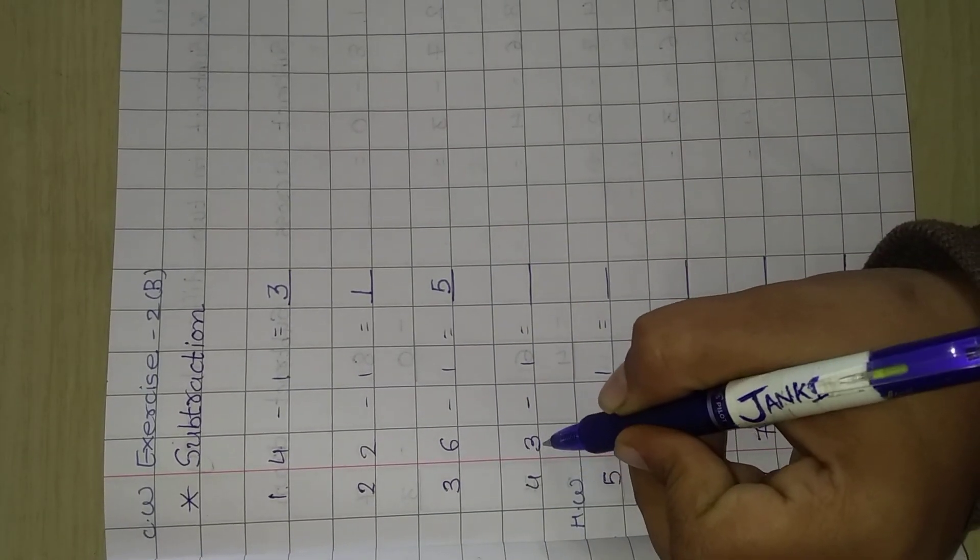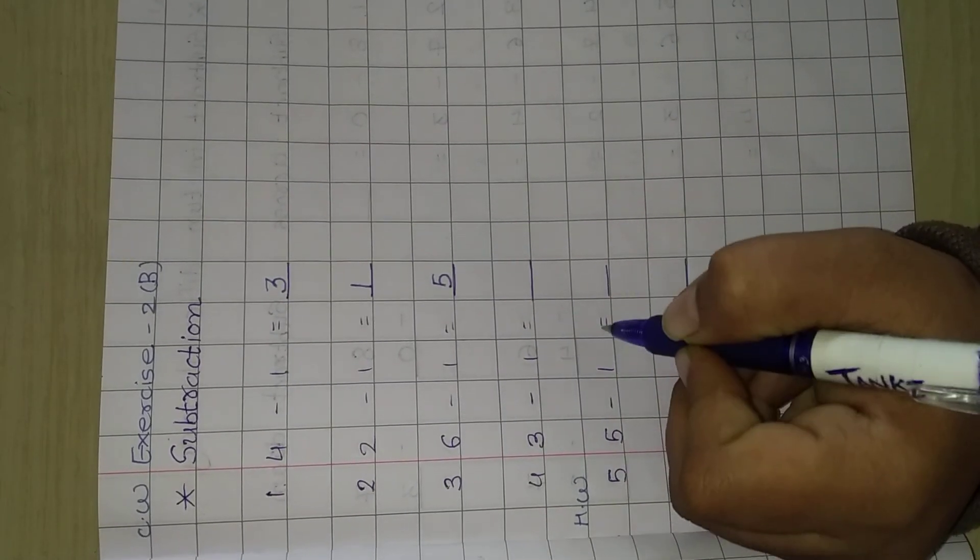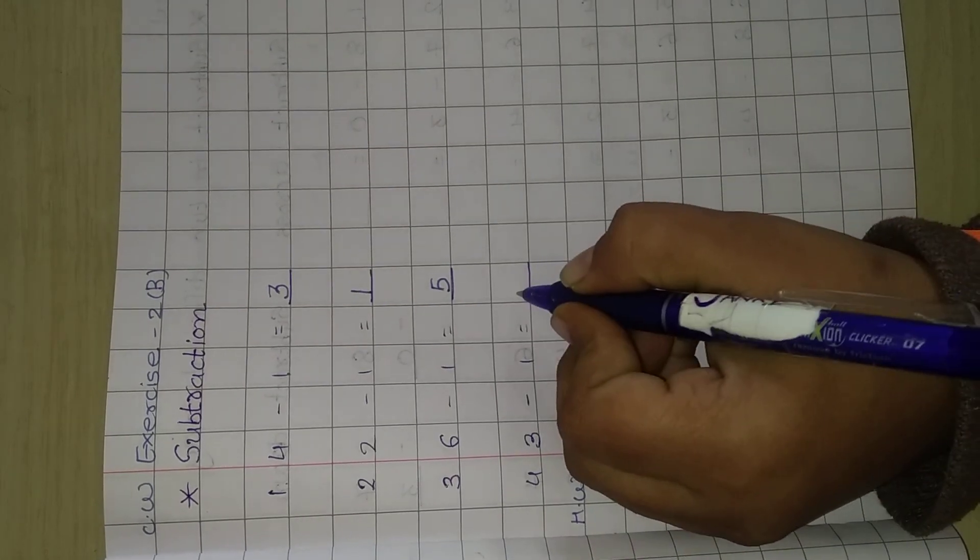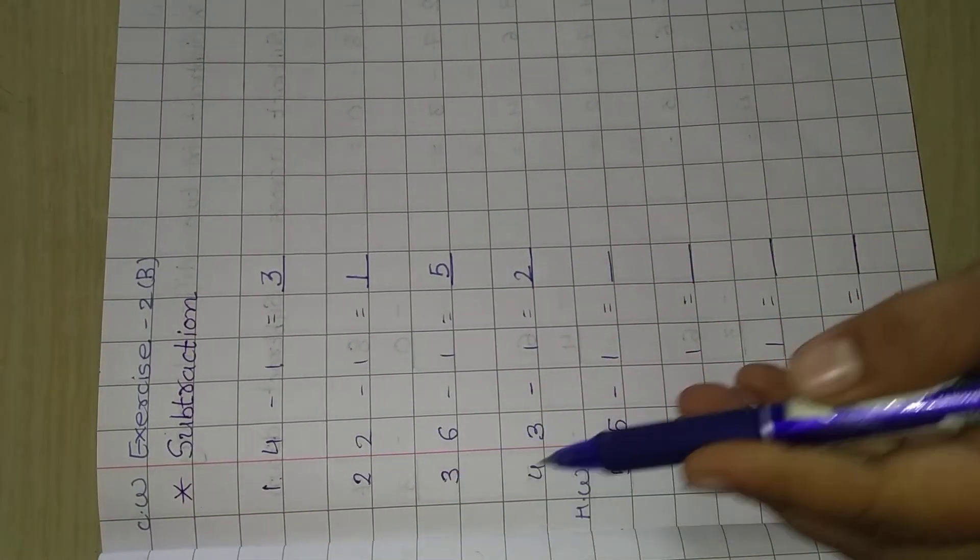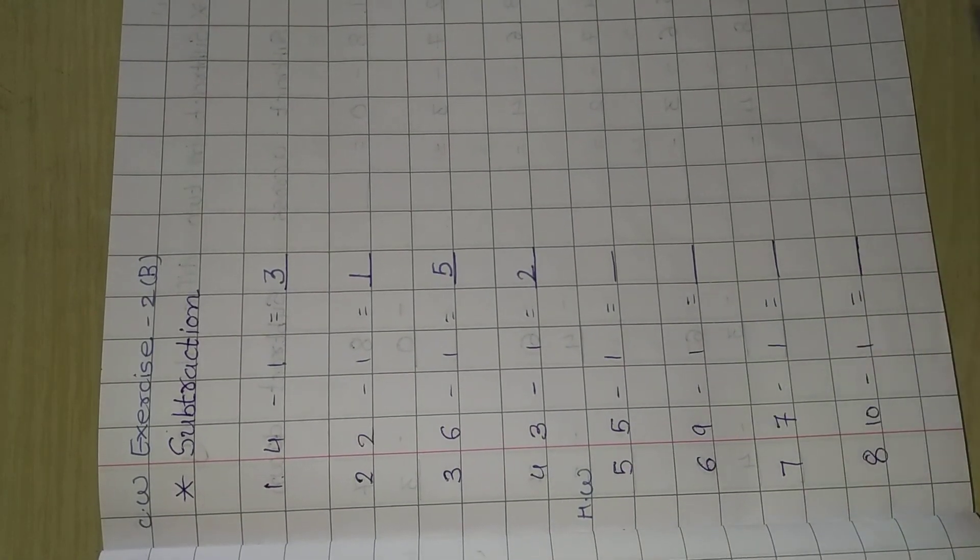Next, 3 minus 1. What number comes before 3? 2. We write in the blank 2. Now these are in classwork and next are in homework.